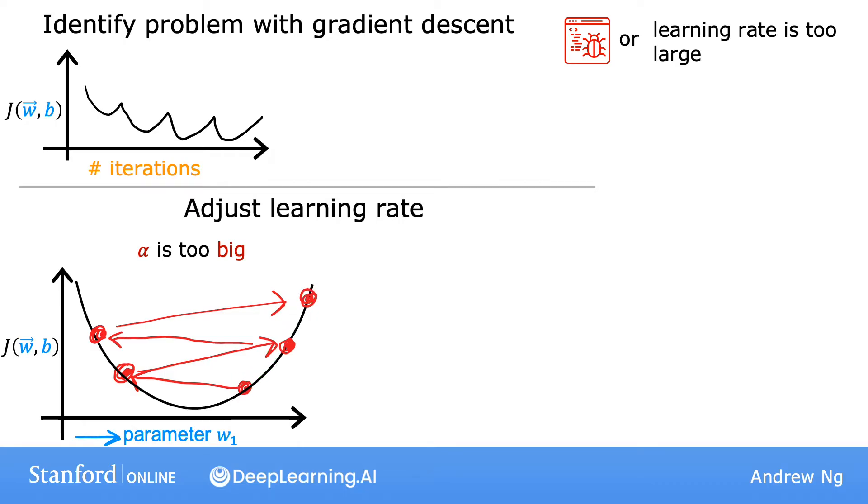To fix this, you can use a smaller learning rate. Then your updates may start here and go down a little bit and down a bit, and will hopefully consistently decrease until it reaches the global minimum.